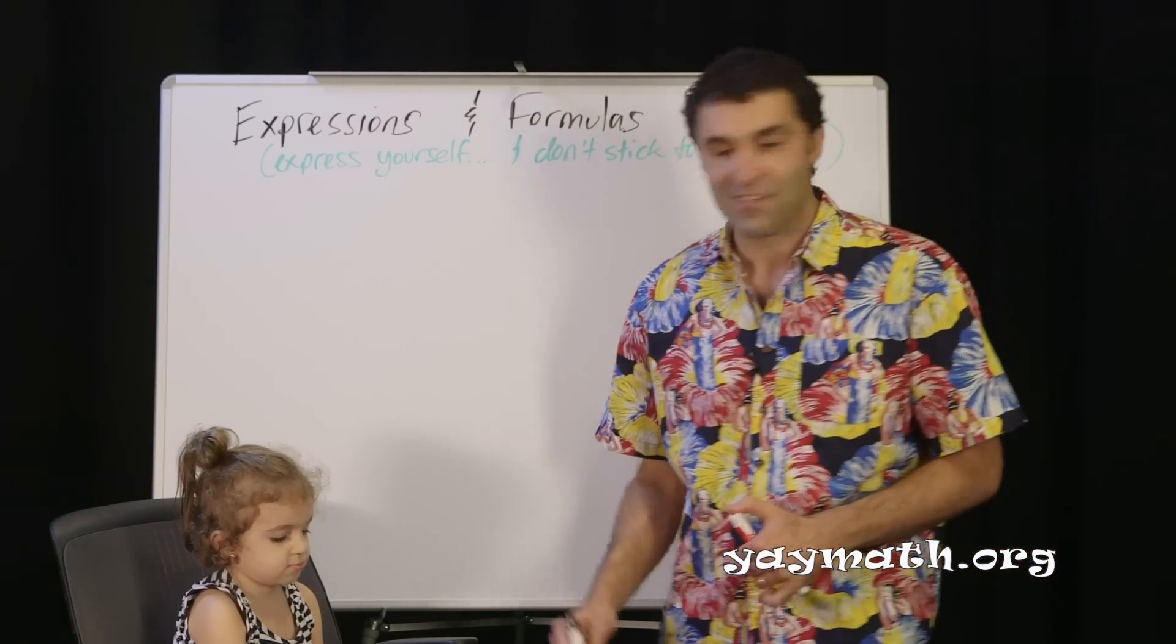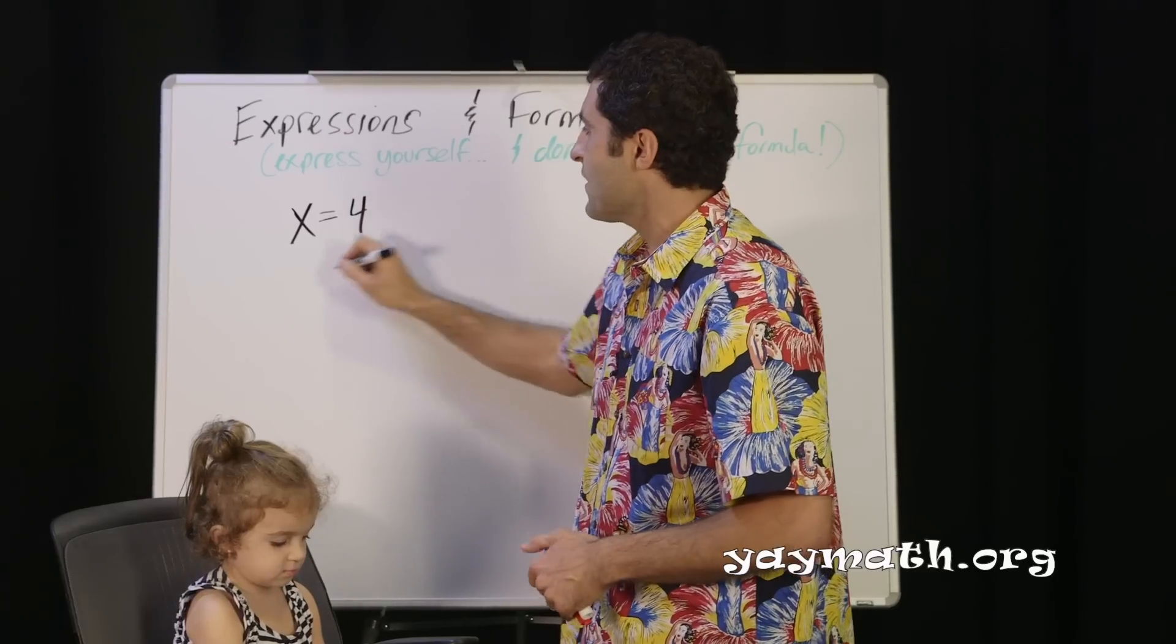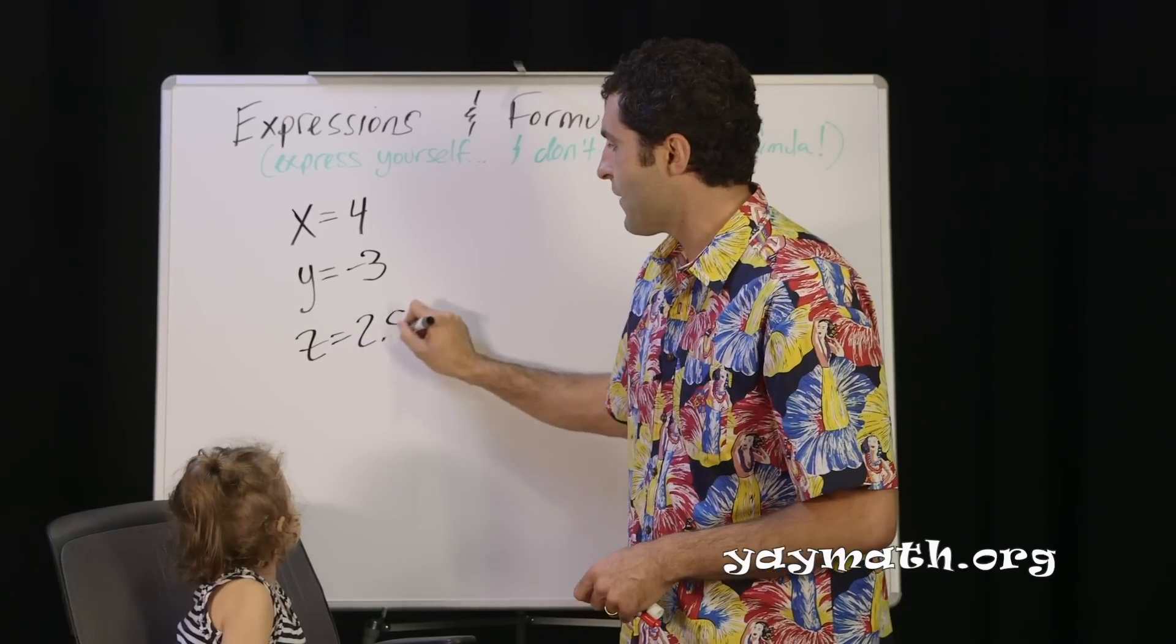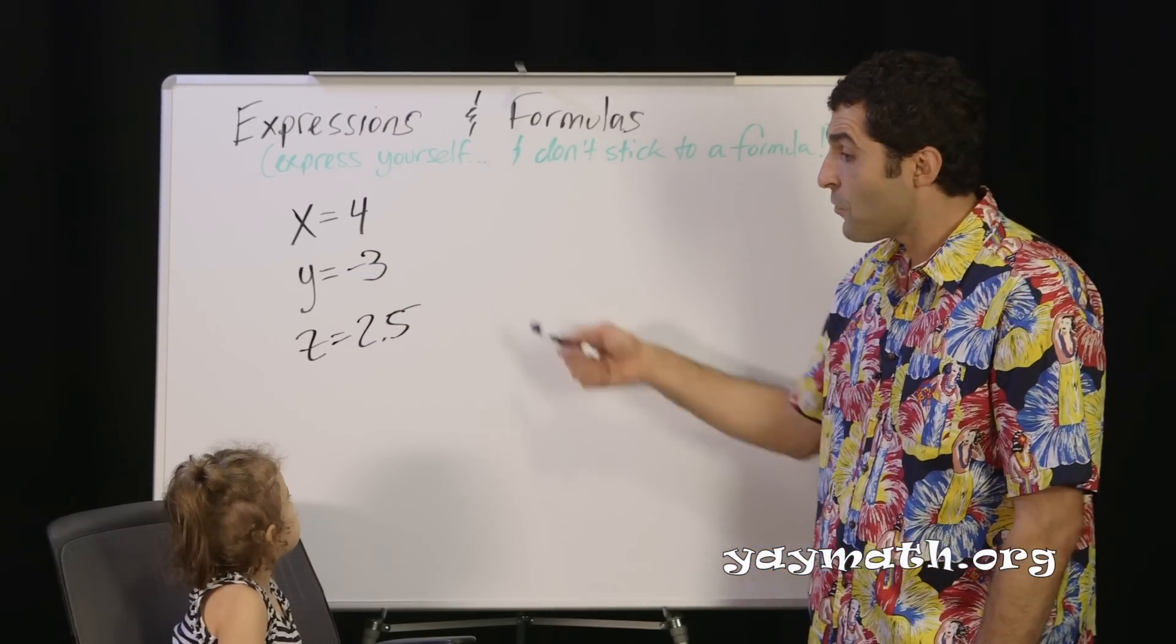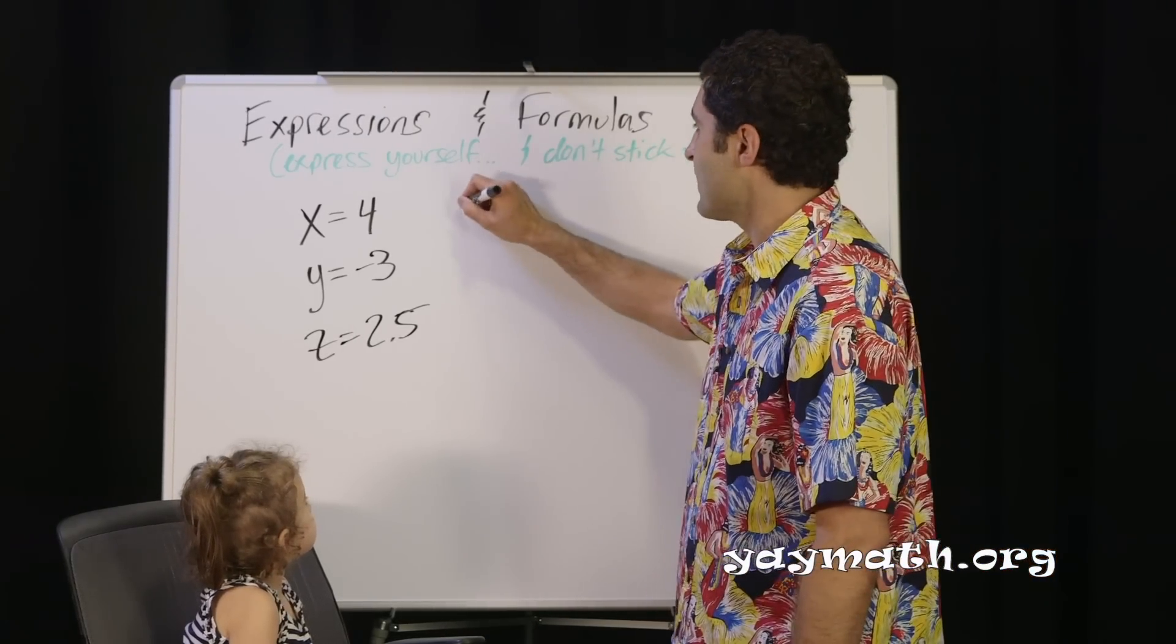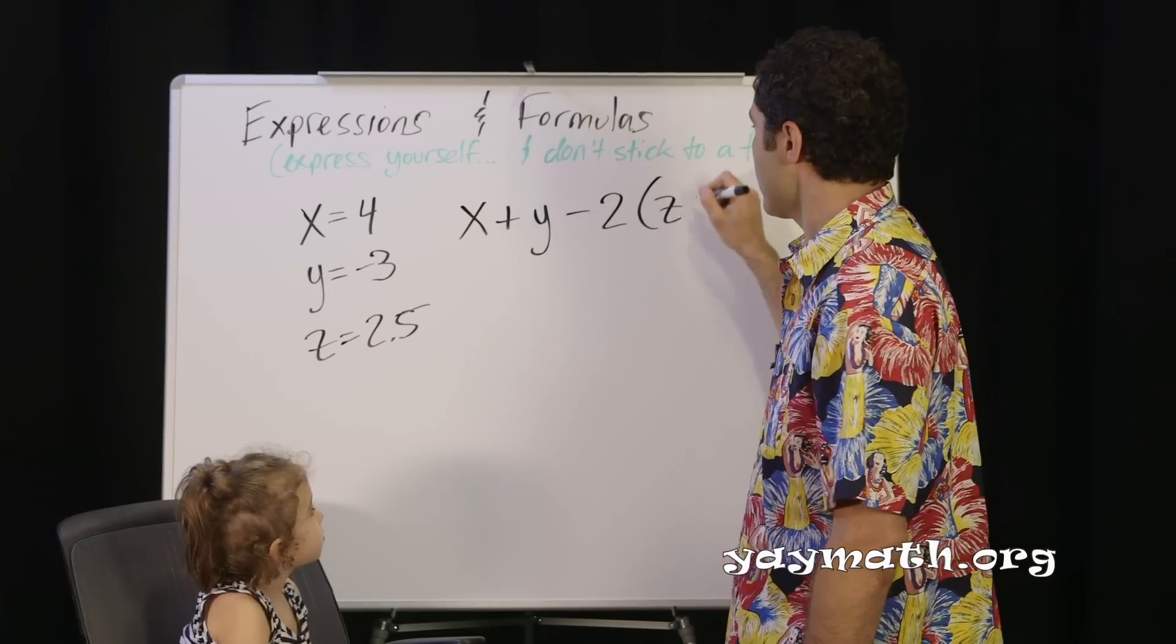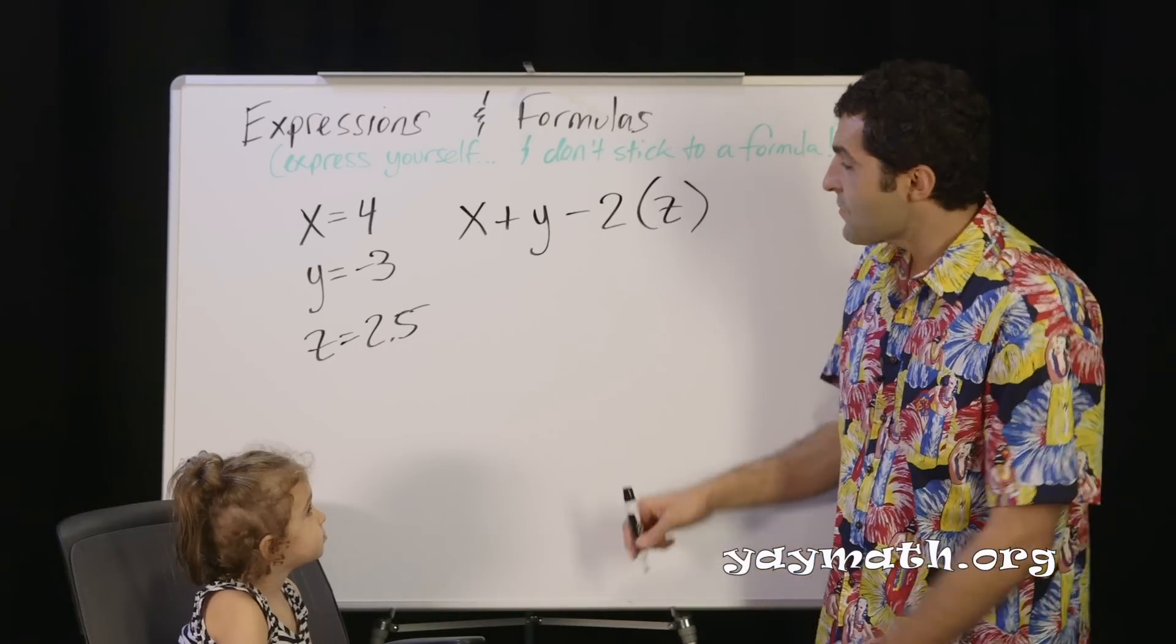Suppose you have x equals 4, y equals negative 3, and z equals 2.5. See, these are letters and numbers. If you wanted to do math with them, it would look something like this. Let's say you wanted to do x plus y minus 2 times z. You want to do this math together? Okay, let's do it.